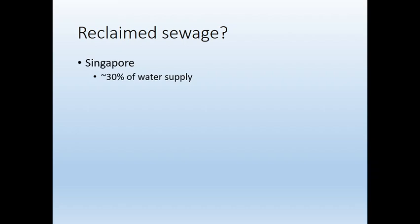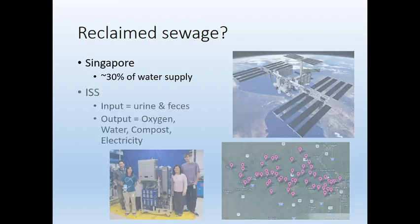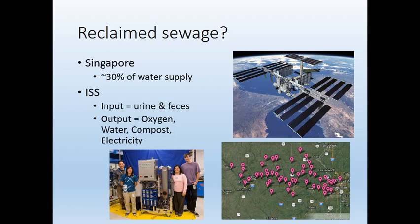San Diego has a portion of their water supply as reclaimed sewage. Places like the International Space Station have been doing this — this is the actual water unit where it takes urine and feces and creates oxygen for the whole space station, water that they drink, compost, and electricity. When people think of this technological system they say okay, maybe that's fine. But what's not really known is that most people in the United States are drinking reclaimed sewage one way or another.